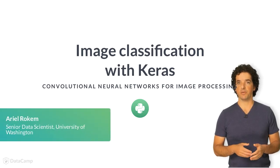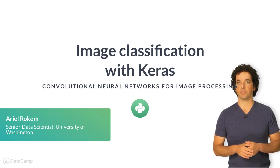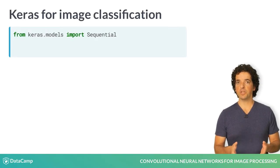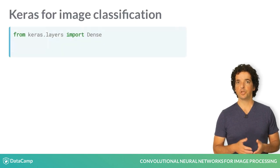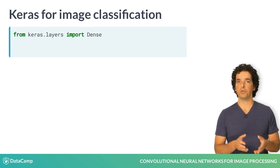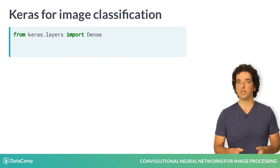Let's use Keras to classify images. We'll start by using a fully connected network, like the one that you saw in the deep learning course. We start by importing the sequential model and initializing it. To construct our network, we will use densely connected layers — every unit in every layer is connected to all the units in the previous layer. The first layer of the network is connected to all the pixels in the input image.